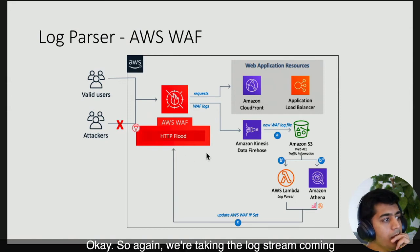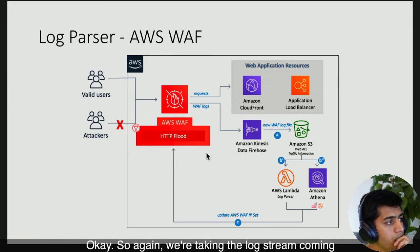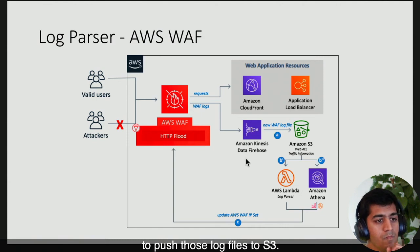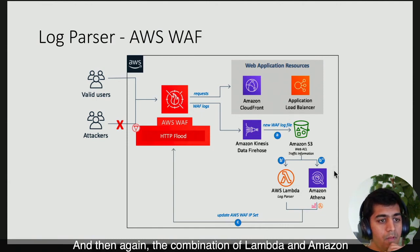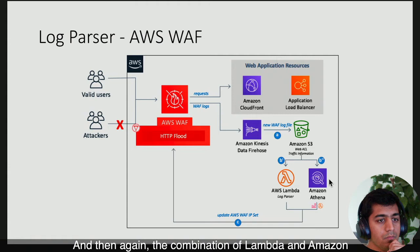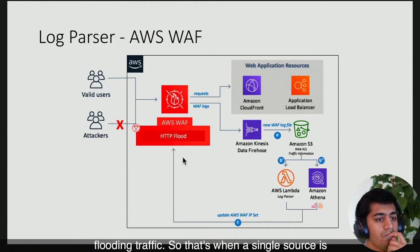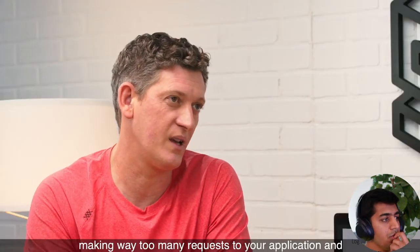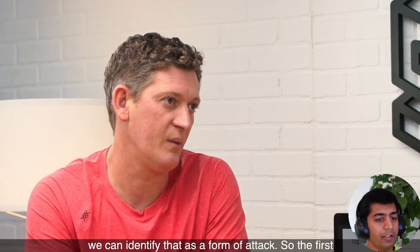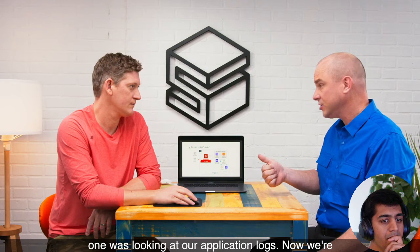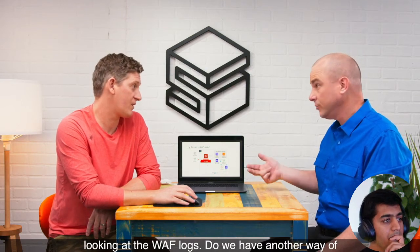There are a couple of different approaches. The other one is actually parsing the WAF logs themselves. Again, we're taking the log stream coming from AWS WAF, using Amazon Kinesis Data Firehose to push those log files to S3, and then again the combination of Lambda and Amazon Athena to query those log files. In this particular instance, what we're looking for is HTTP flooding traffic — when a single source is making way too many requests, which we can identify as a form of attack.